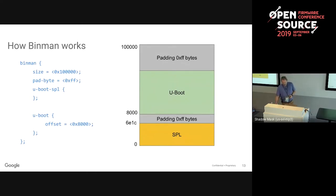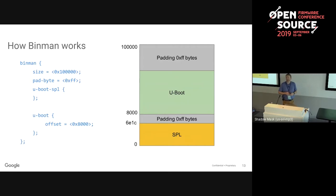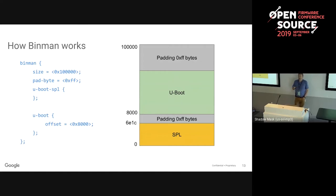This is how Binman works. On the left is a description of the image; on the right is the actual image you get. We have SPL, then some padding because we told it that U-Boot starts at 32K, then U-Boot, and some more padding up to the total size of the image. We've told it the pad byte we want. That's a pretty simple image - mostly equivalent to cat, except for the padding.